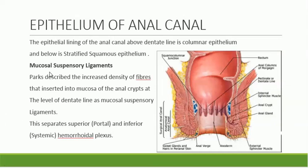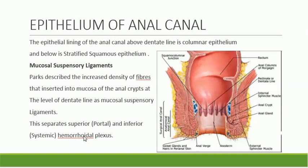Parks described increased density of fibers inserting into the mucosa of the anal crypts at the level of the dentate line as mucosal suspensory ligaments. These provide support and separate the superior portal and inferior systemic hemorrhoidal plexuses.